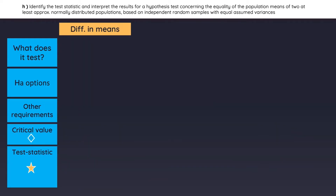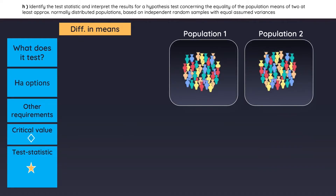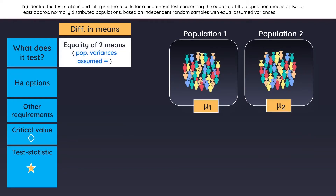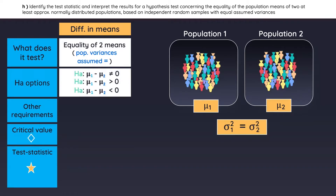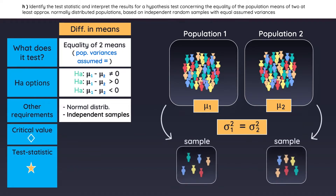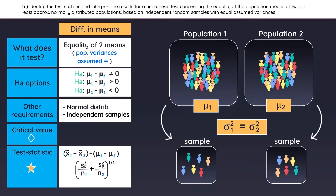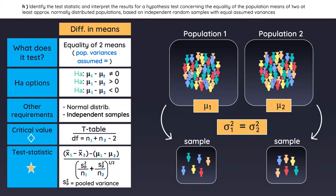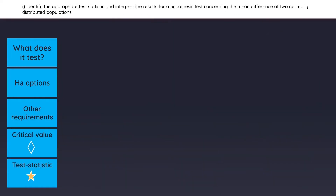Next, we have the difference in means test. This is used when you have two populations and you want to test the equality of their means. This test assumes that the two populations' variances are equal. These are the three possible alternative hypotheses, taking the difference between the two population means to test their equality. The populations must be normally distributed, and the samples must be independent. If they are not, then you have to use a paired comparisons test. The test statistic is usually given, but here is the formula, which uses a term called the pooled variance. The critical value is found on the t-table — pay extra attention to the formula for the degrees of freedom.